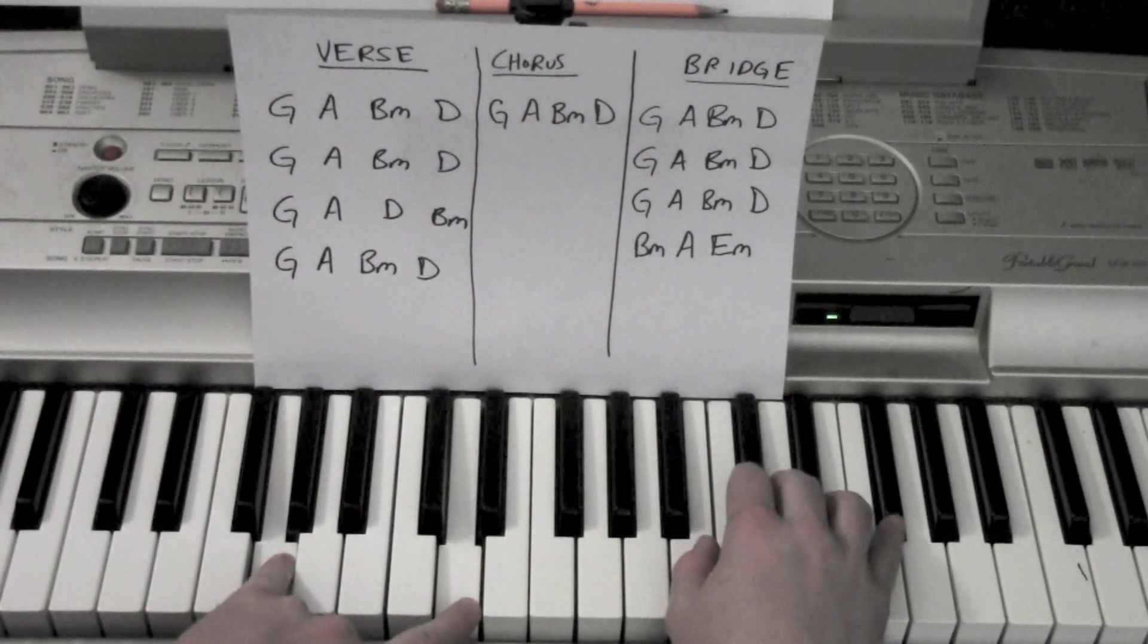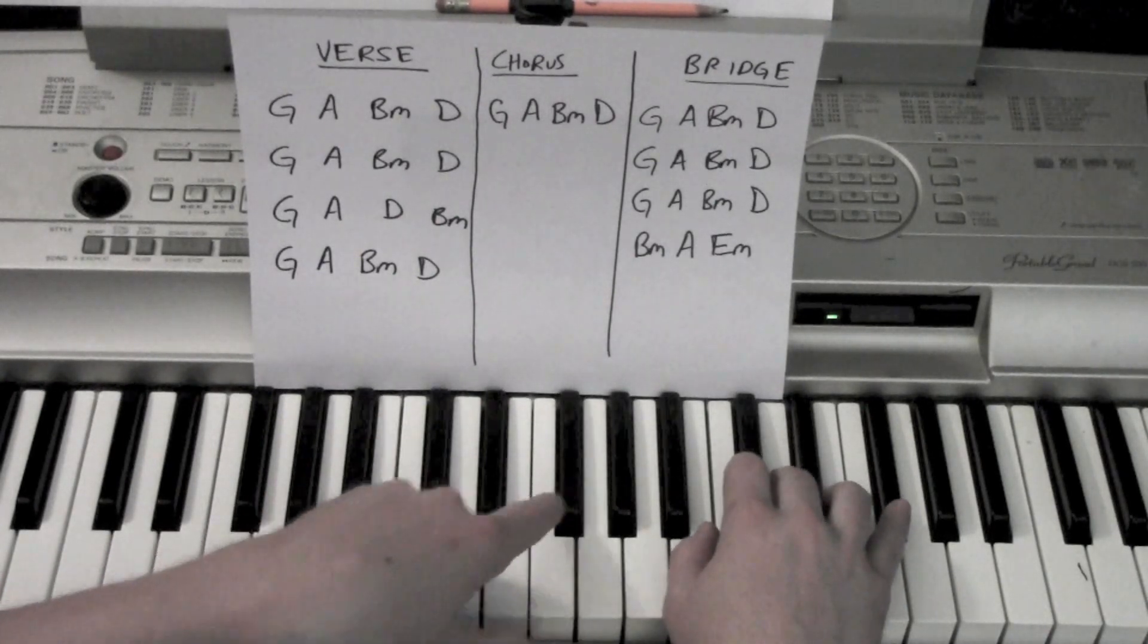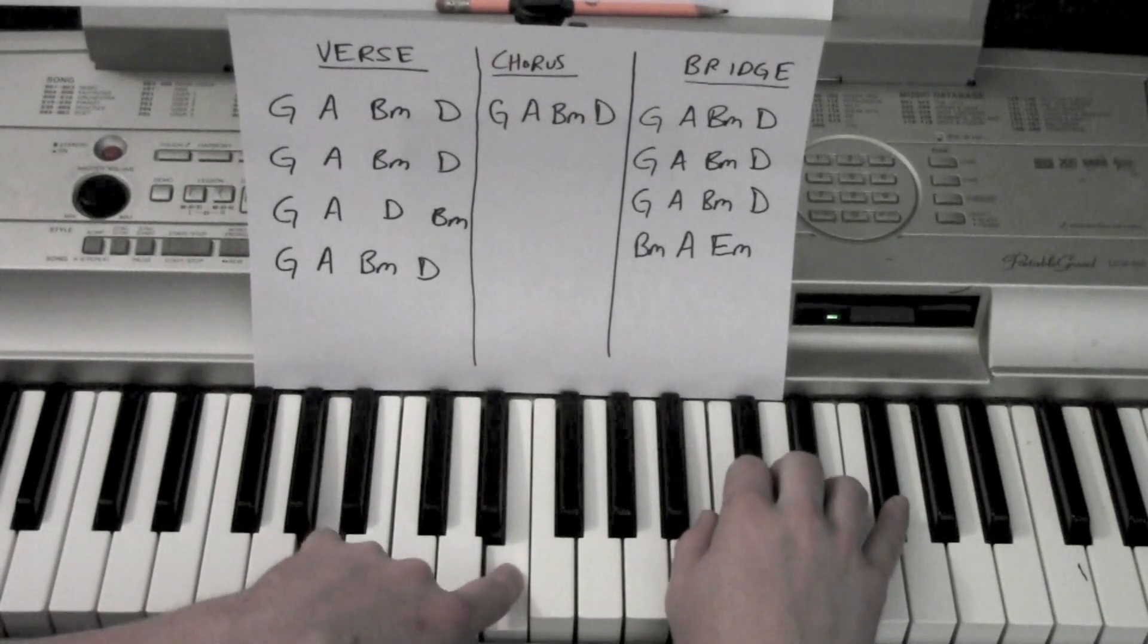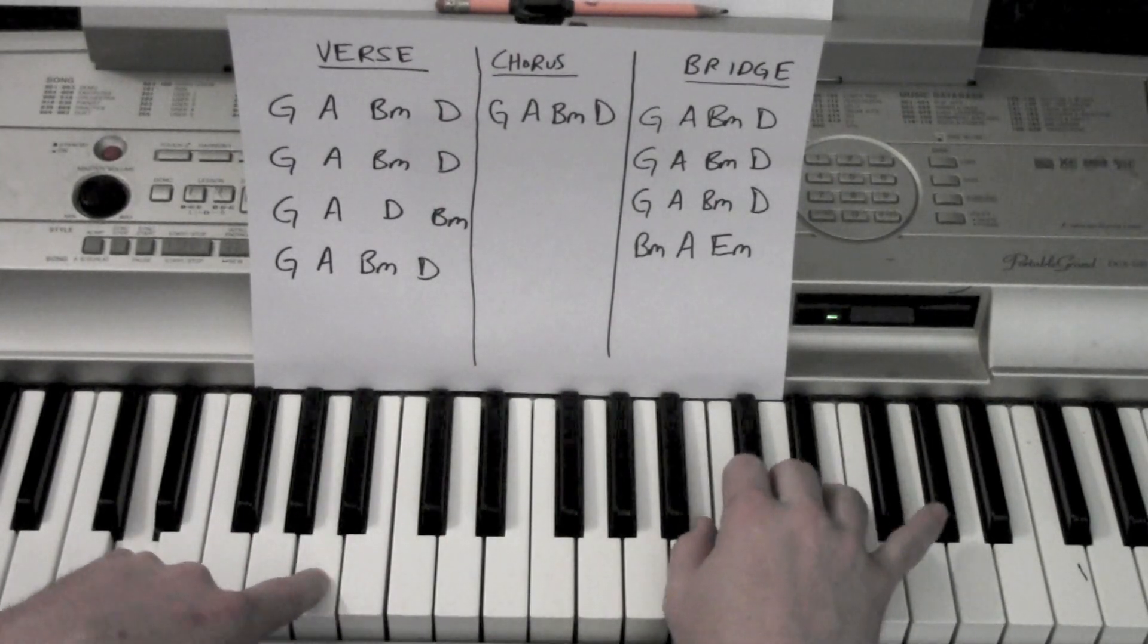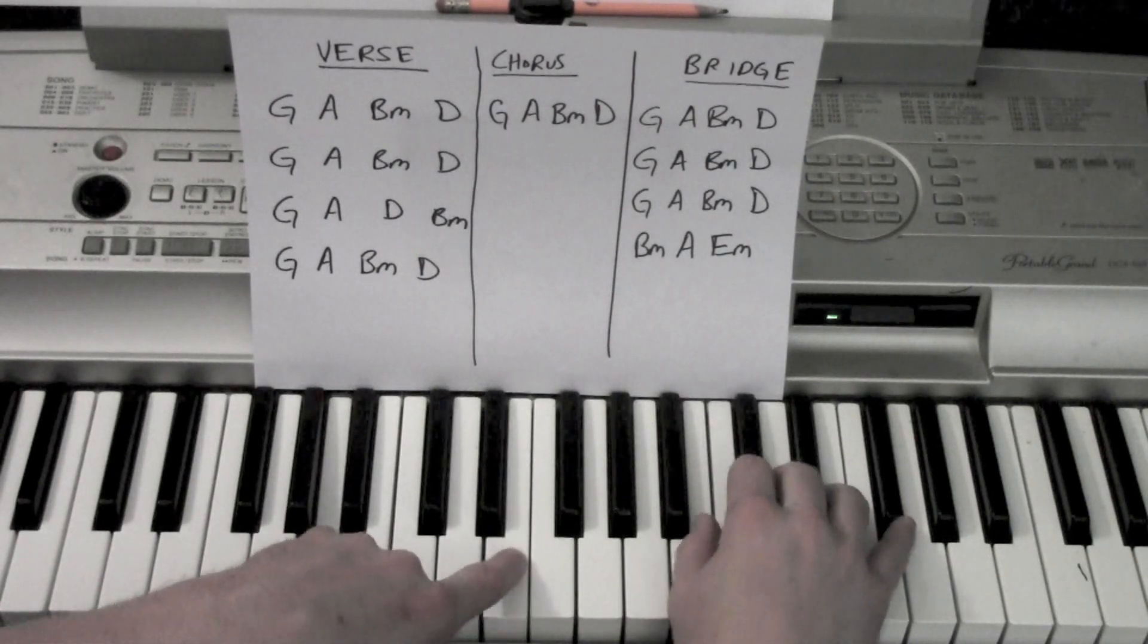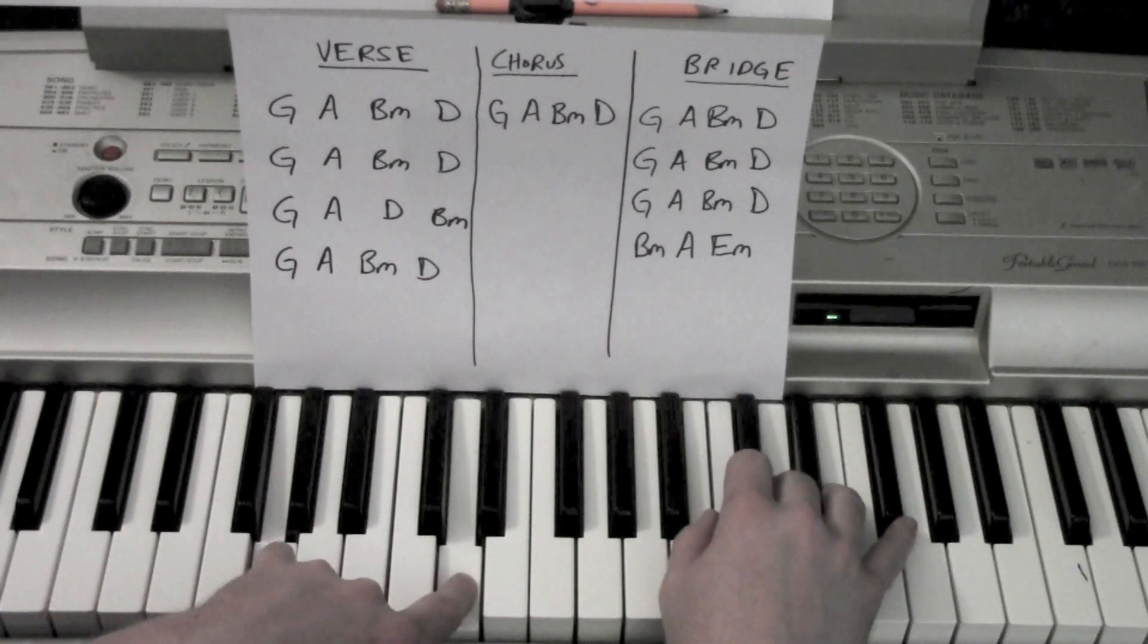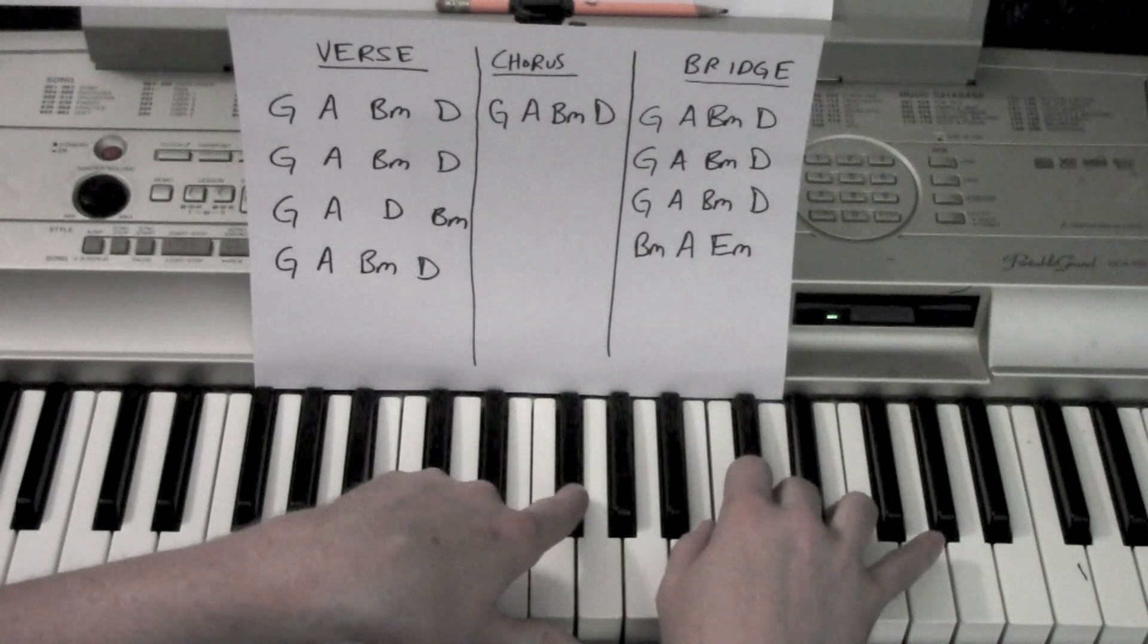Will you still love me (G) when I'm no longer (A) young and beautiful (B minor, D). Will you still love me (G) when I got nothing (A) but my (B minor) aching soul (D). I know you will (G), I know (A), I know that you will (B minor, D). Will you still (G) love me when I'm (A) no longer young and beautiful (B minor, D). Good.